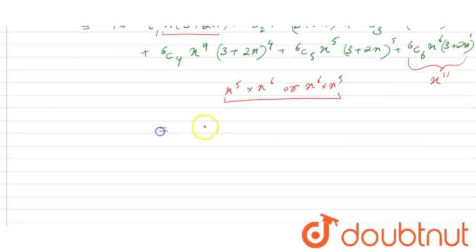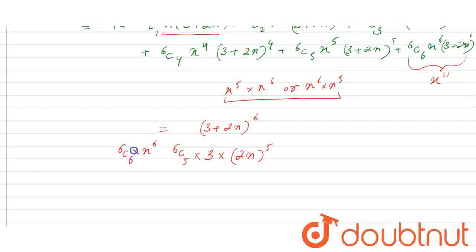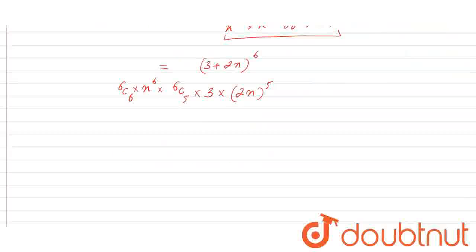From the term 6C6·x⁶·(3 + 2x)⁶, expanding (3 + 2x)⁶ and taking the x⁵ term: using nCr with r=5, this gives 6C5·3¹·(2x)⁵. Multiplied by x⁶ gives x^11. Also from 6C5·x⁵·(3 + 2x)⁵, taking the x⁶ term: 6C6·(2x)⁶. So the coefficient of x^11 is: 1 × 6 × 3 × 2⁵ × x^11.